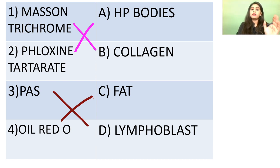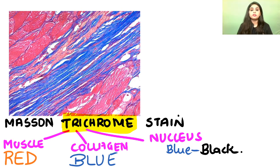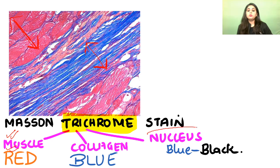Masson trichrome — the word trichrome means three colours. Two are evident: blue and red. Remember the mnemonic 'MISTER' — muscle stains red, collagen stains blue, and nuclei stain blue-black. So in the options, Masson trichrome corresponds to collagen. Do not confuse this with Masson-Fontana, which is used as a special stain for melanin.